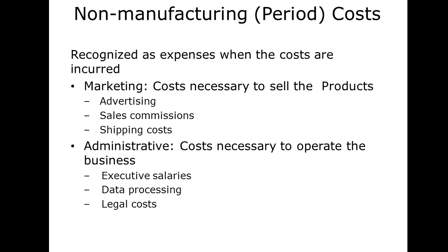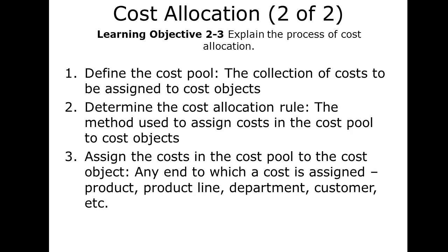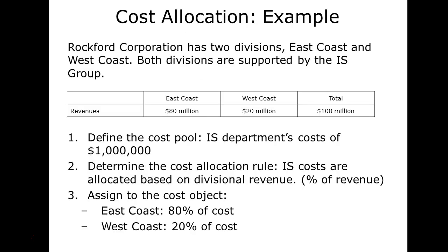Non-manufacturing costs include marketing, administrative, and accounting costs — costs not traceable to any particular job or manufacturing process but absolutely necessary nonetheless. Allocating costs means taking a cost and spreading it out across the production process. It's the process of assigning indirect costs to products, services, and business units. You find the cost pool, determine the cost allocation rule, and assign the cost pool to the object — the product, product line, department, or customer.